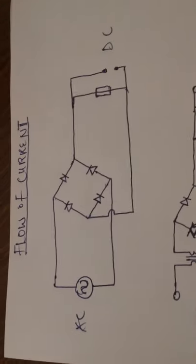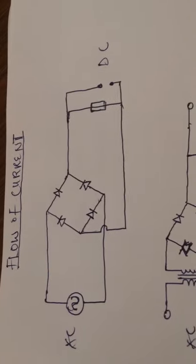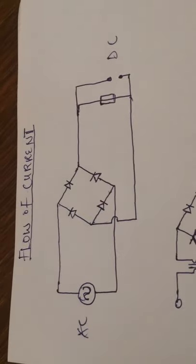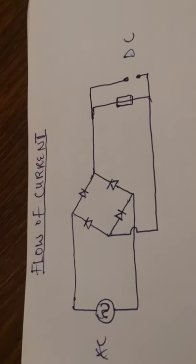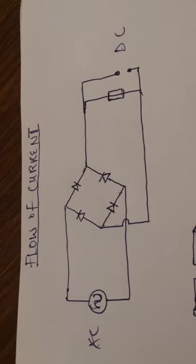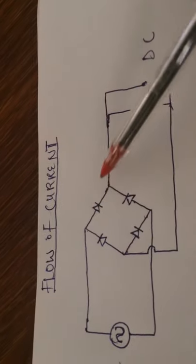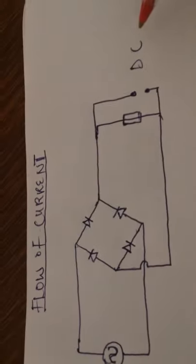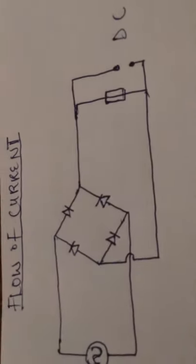Good morning, afternoon, or evening — whatever time you're watching this. I want to explain what happens if one of the four diodes is missing in a circuit. Before we understand this better, let me talk about the flow of currents in the bridge. This is a diode arranged in bridge form, supposed to rectify AC to DC, meaning we want current to flow in only one direction.